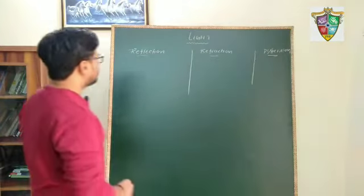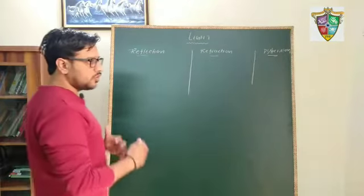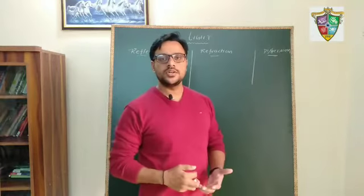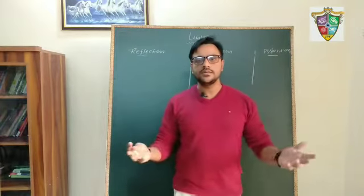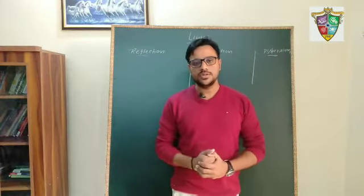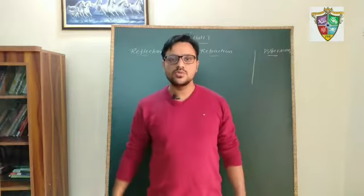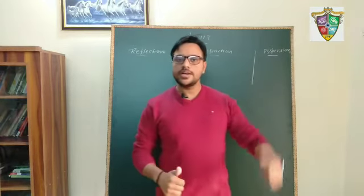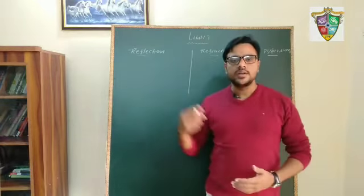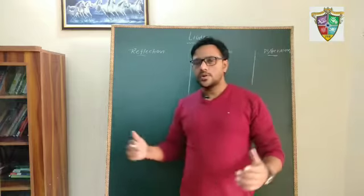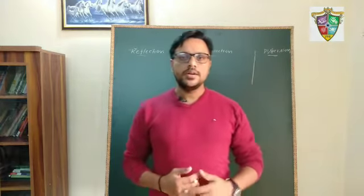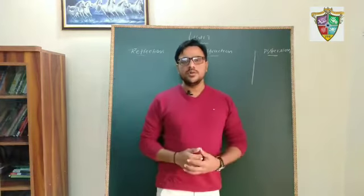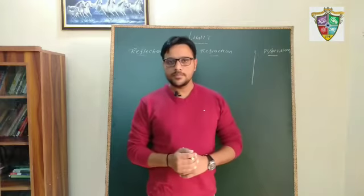In this topic, light, first we should know what is light. Light is a form of energy which enables us to see, by which we can see things. What are the properties of light? Light travels in a straight line. Light does not require any medium to propagate. Speed of light is 3 lakh km per second. All these are the properties of light.